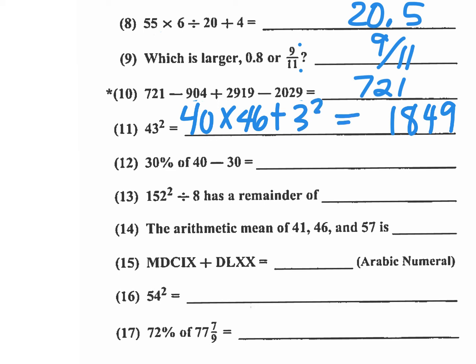And so 40 times 46. Instead of writing a 0 down, you write your 9 for the 3 squared. And then you do 4 times 46. 4 times 46 means you double 46 twice. 46 times 2 is 92. 92 times 2 gives you the 184.